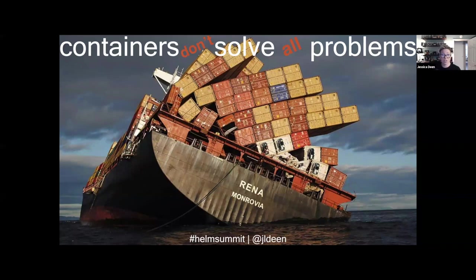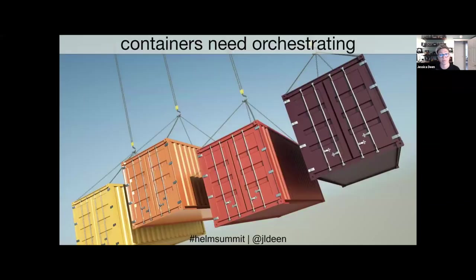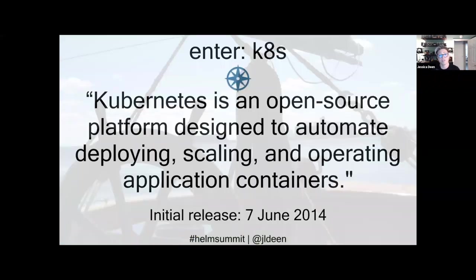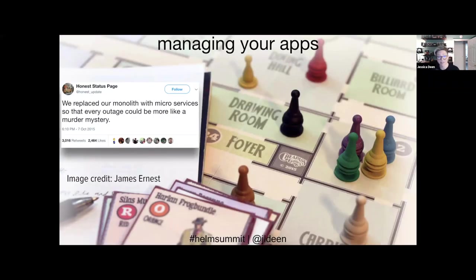One of the considerations at the forefront of core maintainers' minds when thinking about Helm 3 was that containers needed orchestrating, but the way Helm 2 did it could be better and improved. We wanted to simplify the automation, simplify how you handle deploying, make it easier to scale, and make it easier to handle application management. There's a humorous slide here: we replaced all of our monolith with microservices so that every outage could be more like a murder mystery — a giant Clue game. That's where Helm really came in.